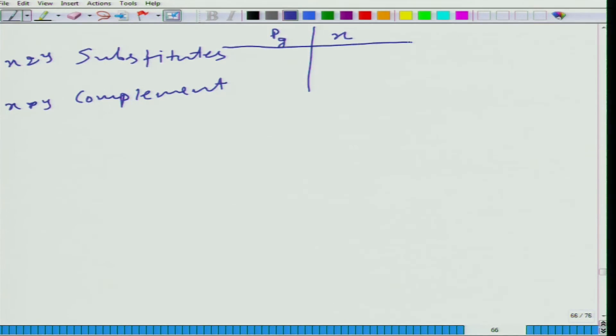If they are substitute, if p_y goes up, what would happen to the quantity of good one? p_y goes up, x will go up. So in this case, what will be the cross elasticity, positive. And if when they are complement, cross elasticity is going to be negative.